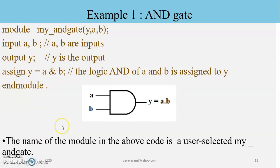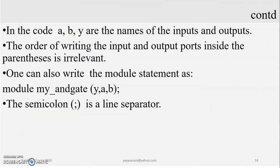The name of the module in the above code is user-defined: 'my_AND_gate.' In the code, A, B, Y are the names of the inputs and outputs. The order of writing the inputs and outputs inside the parenthesis is irrelevant. One can also write the module statement as 'module Y_and_gate(Y, A, B).' The semicolon is a line separator, just like in other software languages — semicolon is always a line separator.